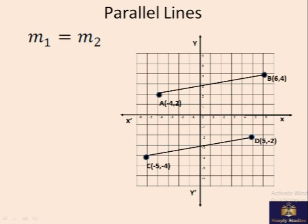Now there's some interesting relationship between the slopes. In case of parallel lines, the slopes are equal. Let's see how. So we can see there are two parallel lines, line 1 and line 2. For line 1, the slope will be the difference between the y-coordinates, that is 4 minus 2, divided by the difference between the x-coordinates, that is 6 minus -4, that is 6 plus 4. So you get 1 over 5. That is the slope of first line.